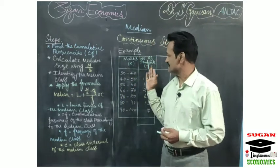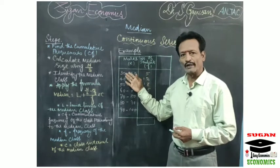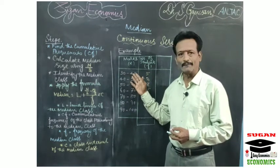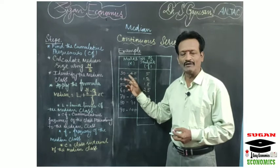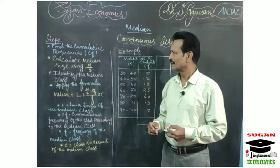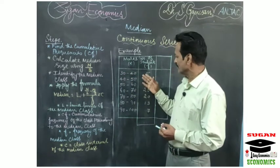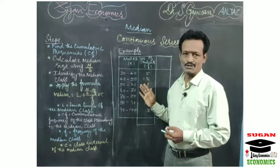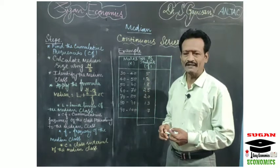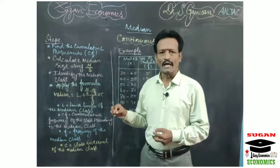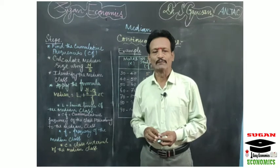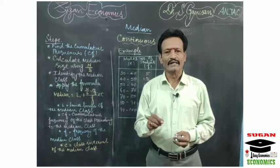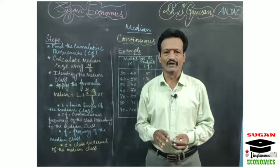In a continuous series we are having both lower limit and upper limits. The values will be in a continuous order, and it has its own corresponding frequency also. Now I am going to explain how to calculate median for continuous series in this video lecture.